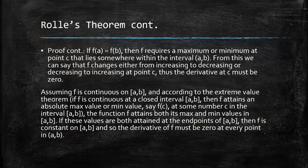Assuming f is continuous on [a, b], and according to the extreme value theorem, if f is continuous at a closed interval [a, b], then f attains an absolute max value or min value, say f(c), at some point c in the interval [a, b]. The function f attains both its max and min values in [a, b]. If these values are both attained at the end points of [a, b], then f is constant on [a, b], and so the derivative of f must be zero at every point in (a, b).